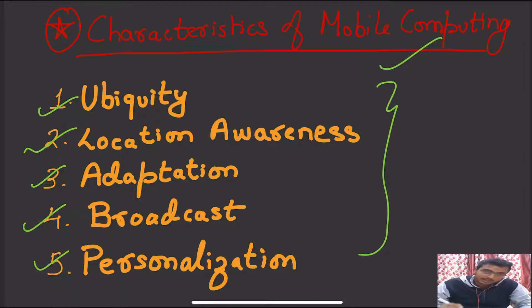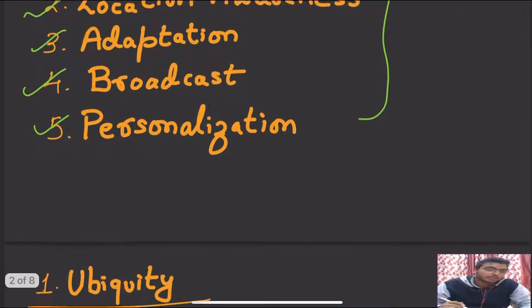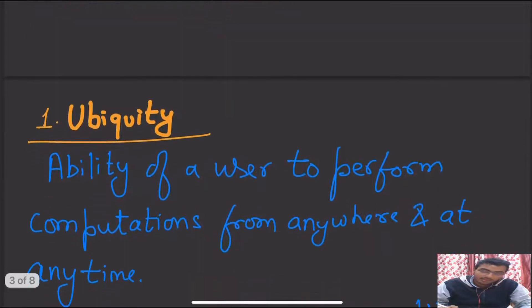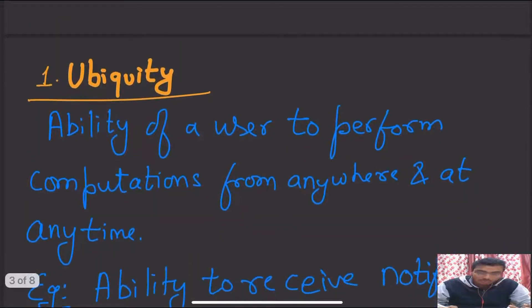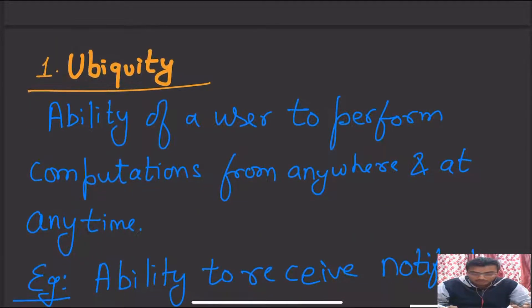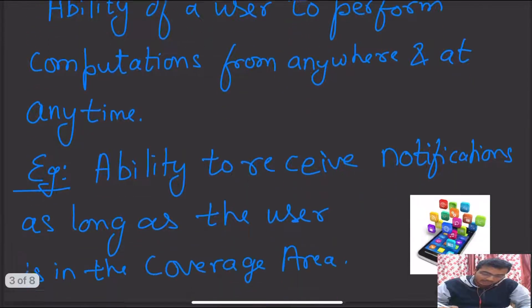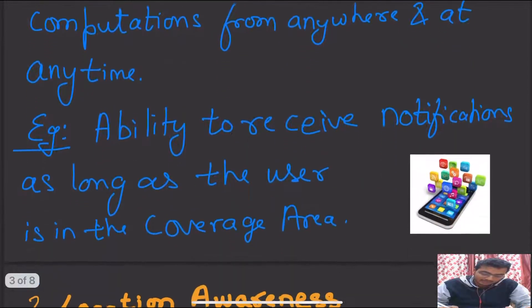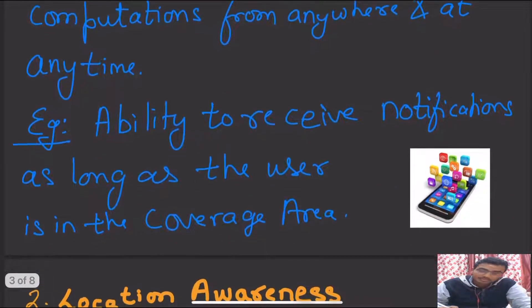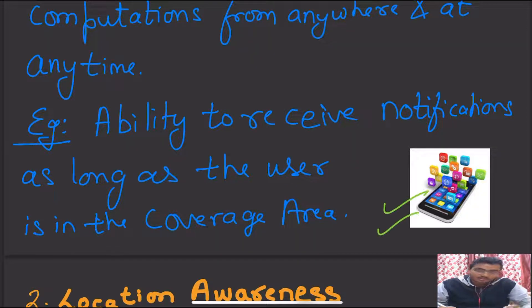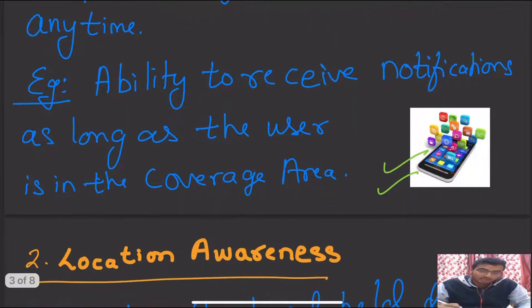What exactly does ubiquity mean? Ubiquity means the ability of a user to perform computations from anywhere and at any time. The ability to receive notifications as long as the user is in a coverage area is one example of ubiquity. This is what ubiquity means — our first point.